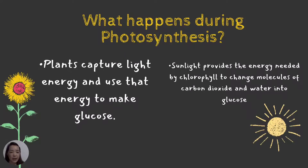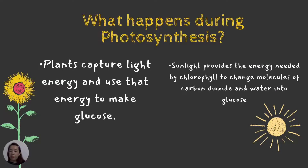What happens during photosynthesis? The plants capture light energy and use that energy to make glucose. Glucose is the food for the plants. Sunlight provides the energy needed by the chlorophyll to change molecules of carbon dioxide and water into glucose.